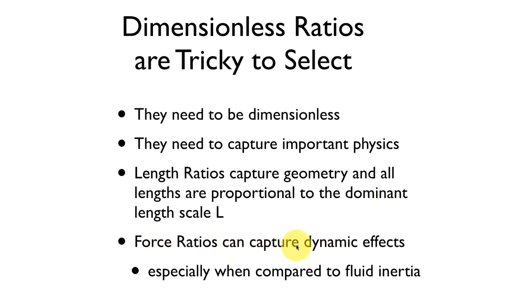If we then look at force ratios, we can capture some dynamic effects. Those force ratios, like that sail area to displacement ratio, tell us something about how our system is going to behave—which forces are more important, which ones are larger compared to others.